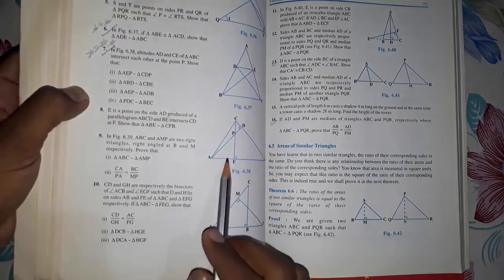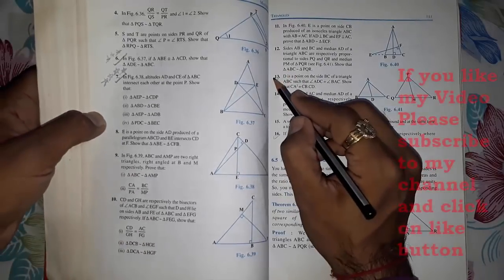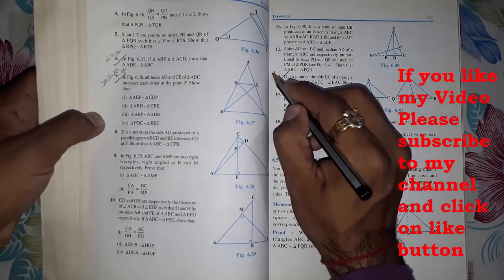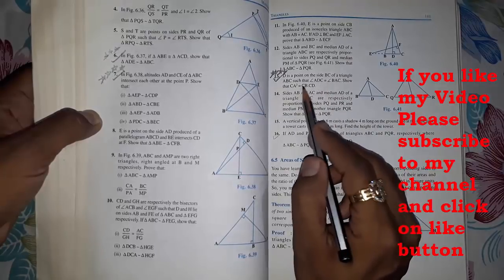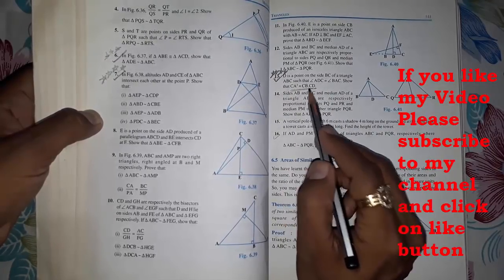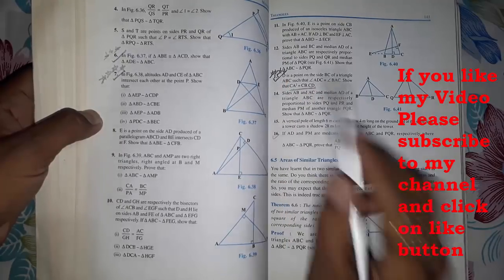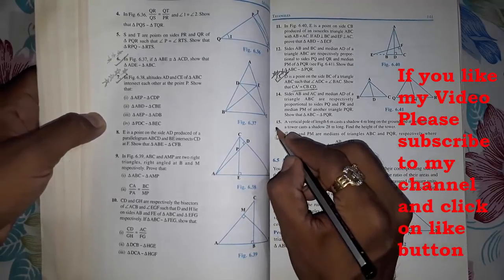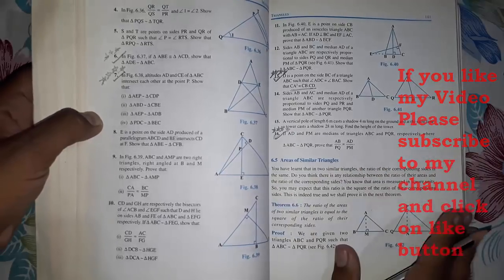Then we move towards Question Number 13 — I will give four stars for this question. They can change the figures or ask such a type where the square of any side equals the product of the other two sides — this type of question they are asking. And Question Number 16 is also important, so four stars for this question.